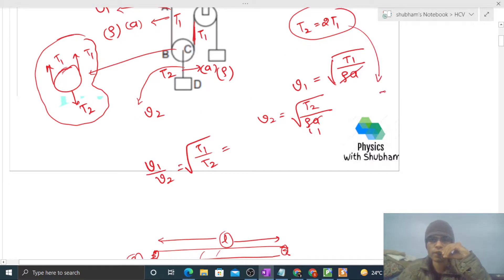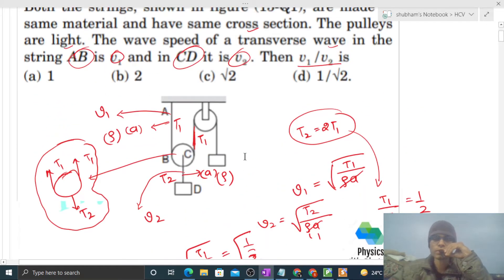Density and area cancel out. It will be under root of T1 by T2. And T1 by T2, you can find out, that will be 1 by 2. So this will be under root of 1 by 2, that is 1 upon under root 2. So this is what we had to find out. Option D will be correct.